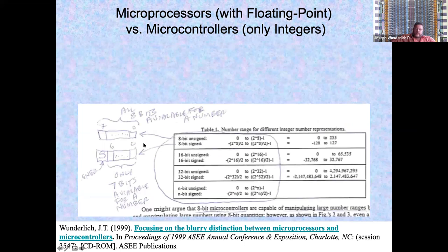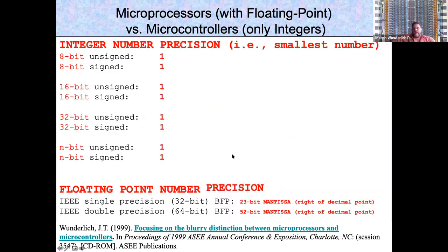Number representations: if you have a sign bit, you only have seven available bits for your magnitude range. Precision is different from magnitude — the right side of the decimal point, your mantissa, gives you your precision. Significand is synonymous with mantissa. You either have 23 bits of that for single-precision float or 52 bits for double. That's how precise the number is, not how large or small the number can be.